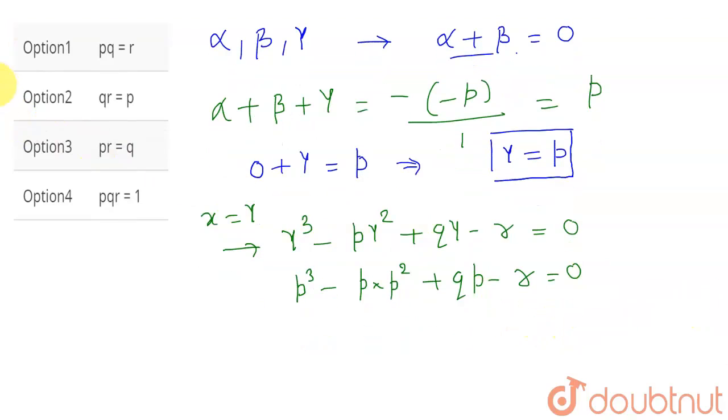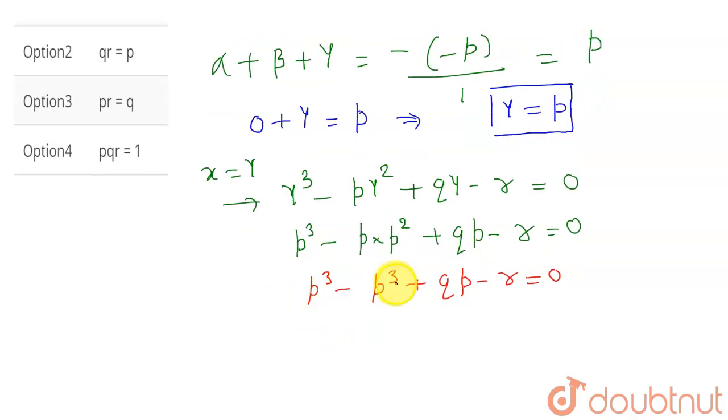So now this will give me p cube minus p cube and qp minus r equal to zero. Now, this p cube minus p cube will give zero. So qp will be equal to r. So I got this expression that qp is equal to r.